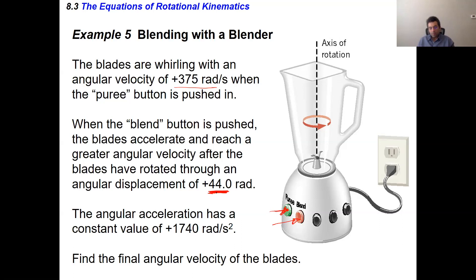So I started at this velocity, and then this angular displacement happens during the acceleration where I'm going from puree to blend. During that displacement, the acceleration has a constant value of 1740 rad/s². Find the angular velocity of the blades during blend. I start out this fast, during this displacement I accelerate by this much—what's the final angular velocity?